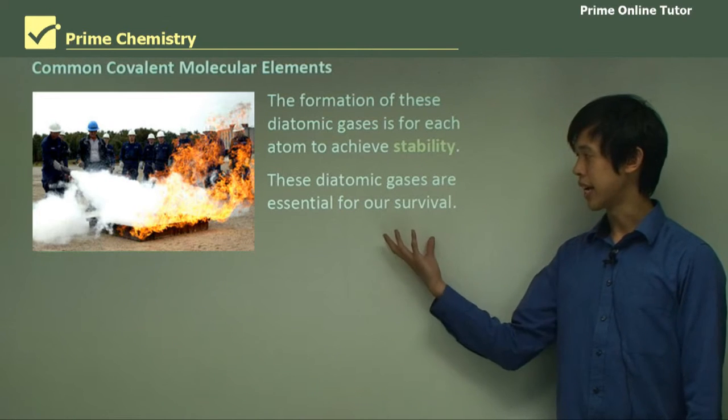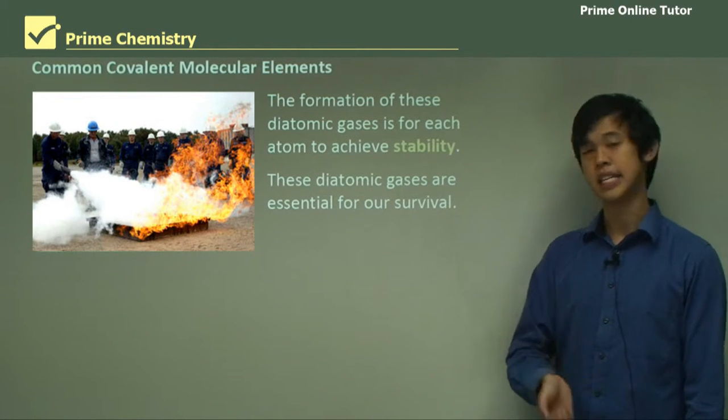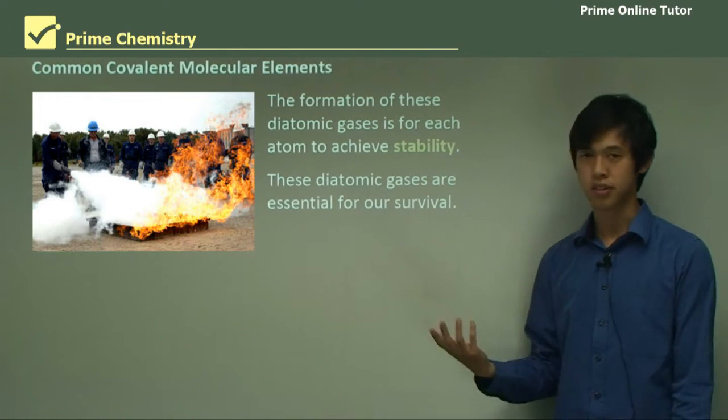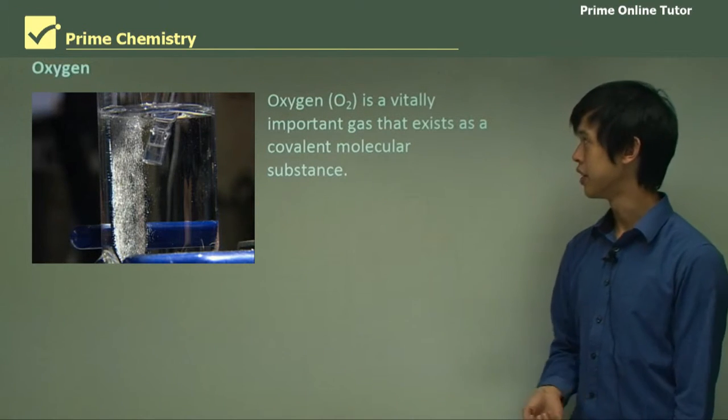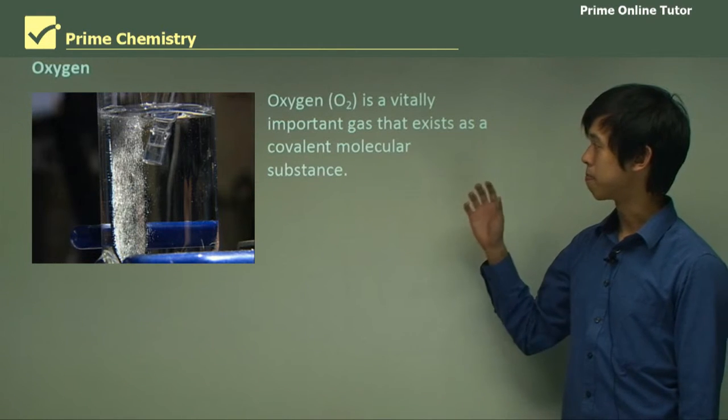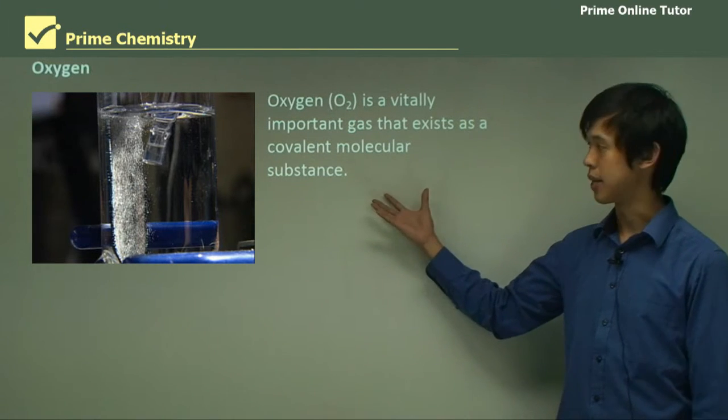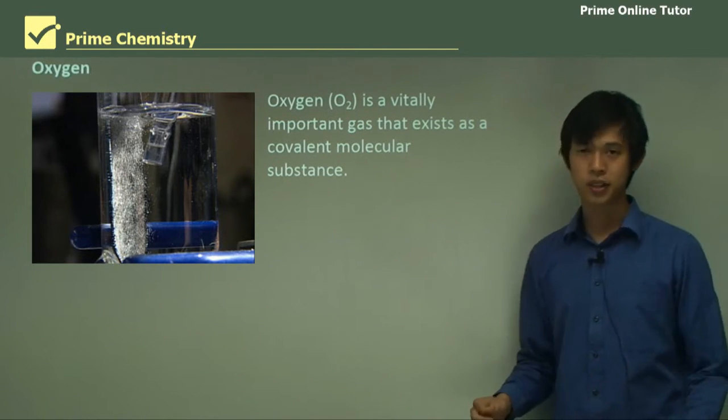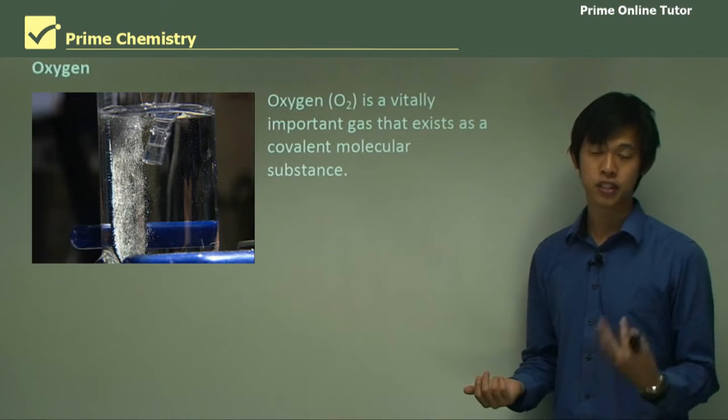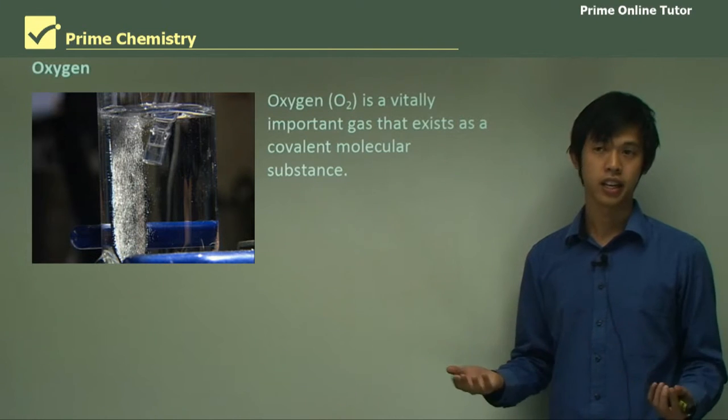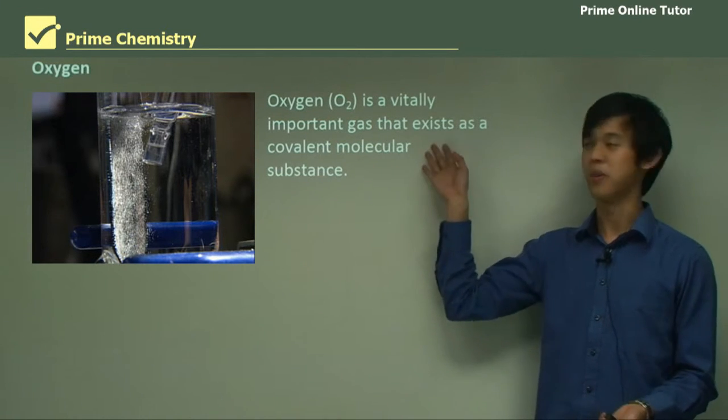These diatomic gases are essential for our survival. We need these diatomic gases or we won't survive. So obviously, the first one we'll talk about is oxygen. So oxygen is vitally important, and it exists as a covalent molecular substance. We need to breathe it in to get energy. And if we stop breathing, we die.